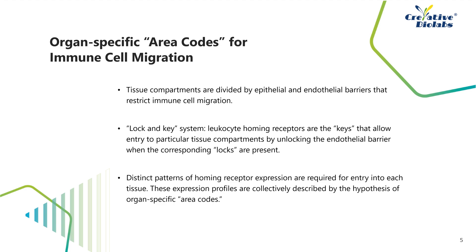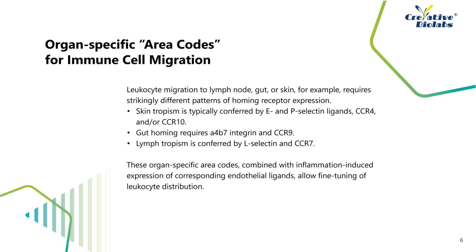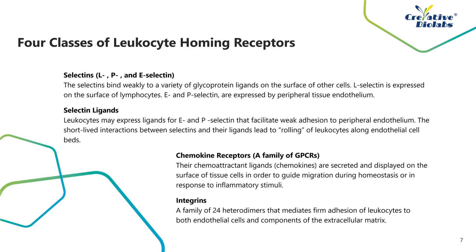Distinct patterns of homing receptor expression are required for entering into each tissue. These expression profiles are collectively described by the hypothesis of organ-specific area codes. For example, leukocyte migration to lymph node, gut, or skin require strikingly different patterns of homing receptor expression. Skin tropism is typically conferred by E- and P-selectin ligands, CCR4, and/or CCR10. Gut homing requires α4β7 integrin and CCR9. Lymph tropism is conferred by L-selectin and CCR7. These organ-specific area codes, combined with inflammation-induced expression of corresponding endothelial ligands, allow fine-tuning of leukocyte distribution.